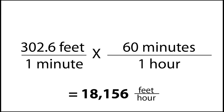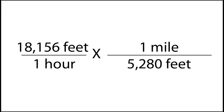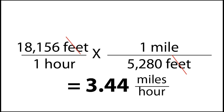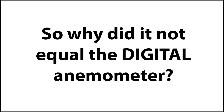Wow, that seems really fast — but we want this in miles per hour. So we take 18,156 feet over 1 hour and cross-multiply to get rid of the feet. Our feet cancel, giving us 18,156 divided by 5,280. This gives us an answer of 3.44 miles per hour.